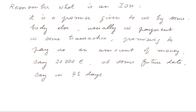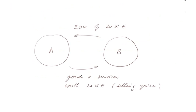Remember what is an AOU? It is a promise given to us by somebody else, usually in payment or in some transaction, promising to pay us an amount of money — say 20,000 euros, which was the example from the beginning of the General Accounting course. The promise is to pay that at some future date, say in 45 days. The transaction looks like this.